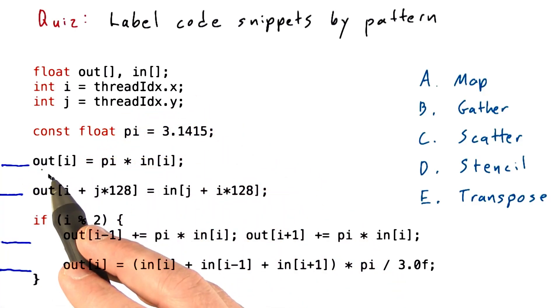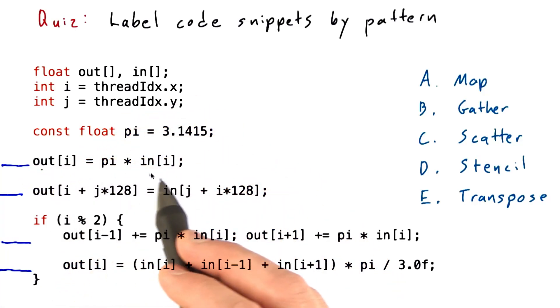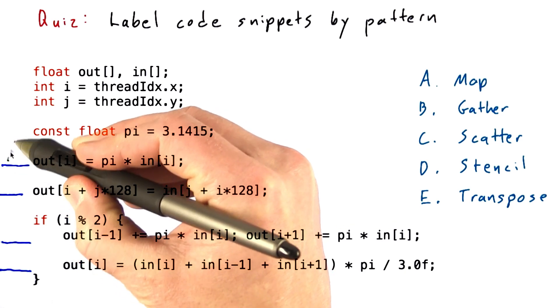So this first one's pretty easy, right? There's a one-to-one correspondence between the output and the input, so that's clearly a map operation.